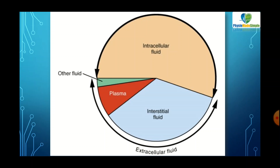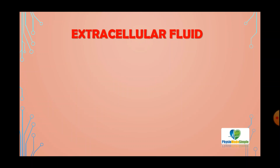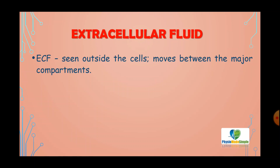There is another category called transcellular fluid. Transcellular fluids are seen in epithelial-lined areas — these include urine, lymph seen in the lymphatic vessels, cerebrospinal fluid seen in the brain, synovial fluid seen in the joints, and others. These form the other types of body fluids. Extracellular fluid is seen outside the cells and moves between the major compartments.